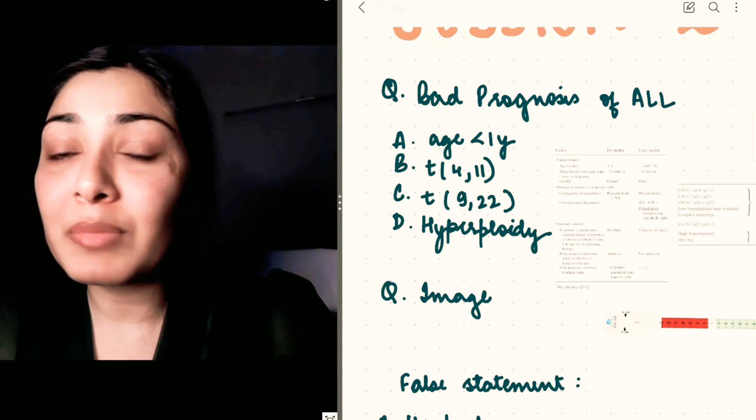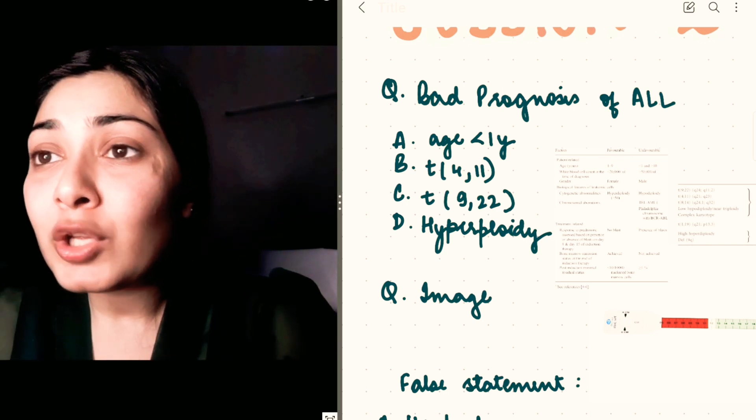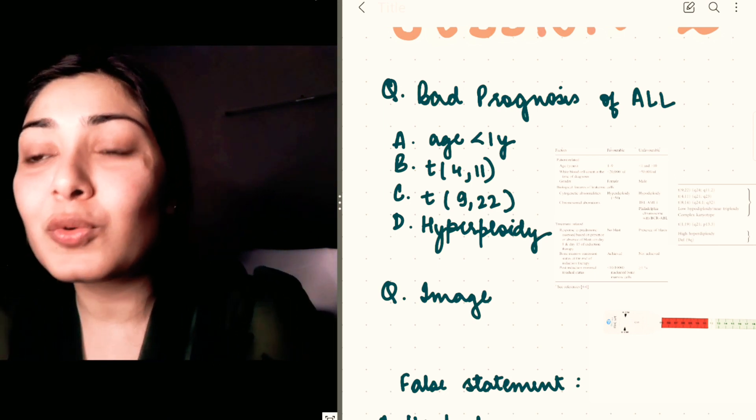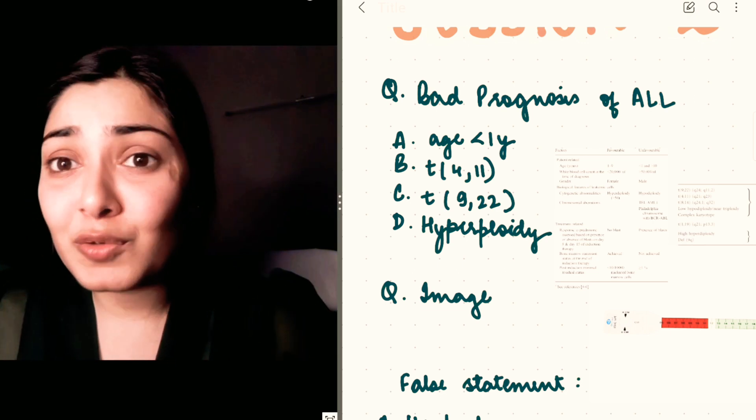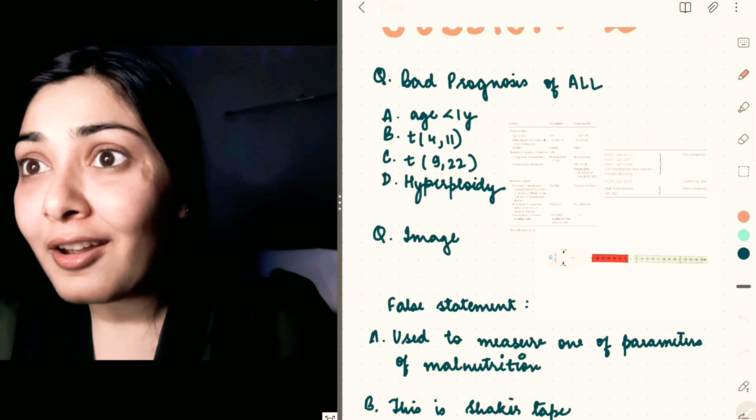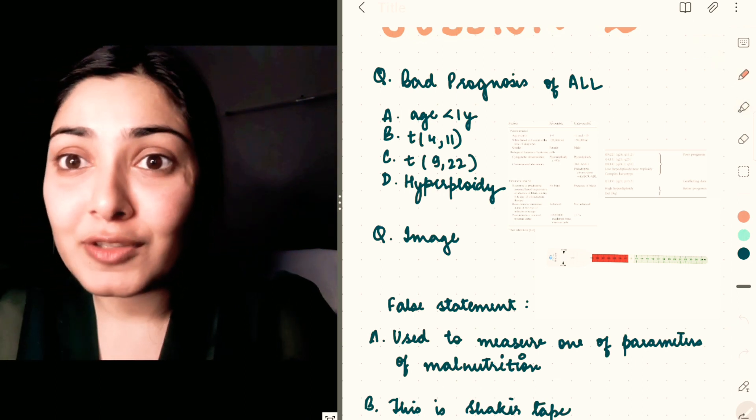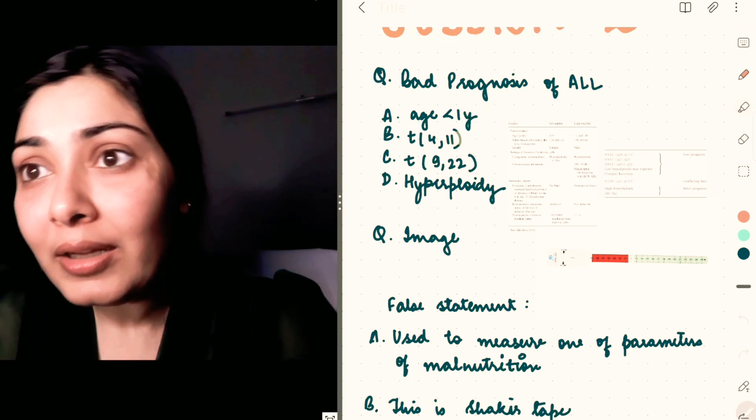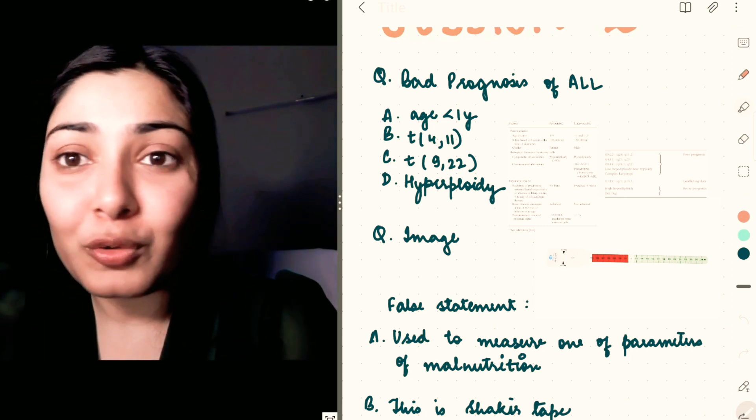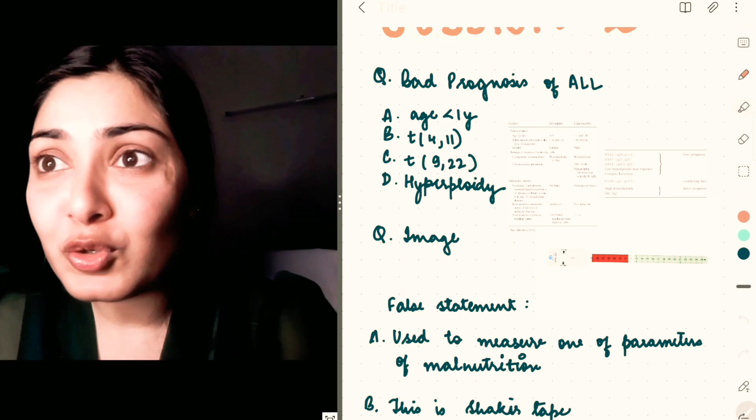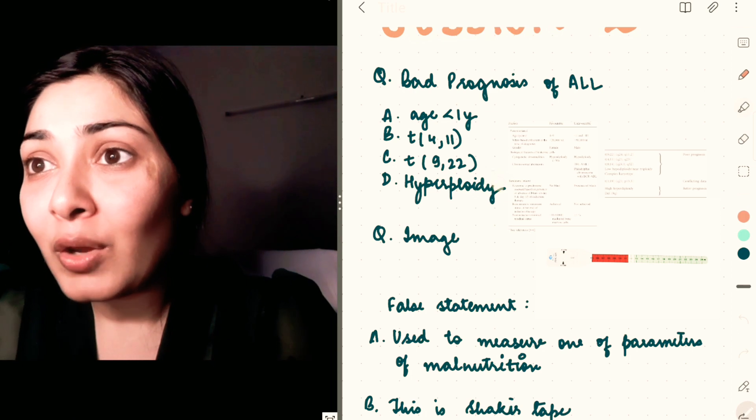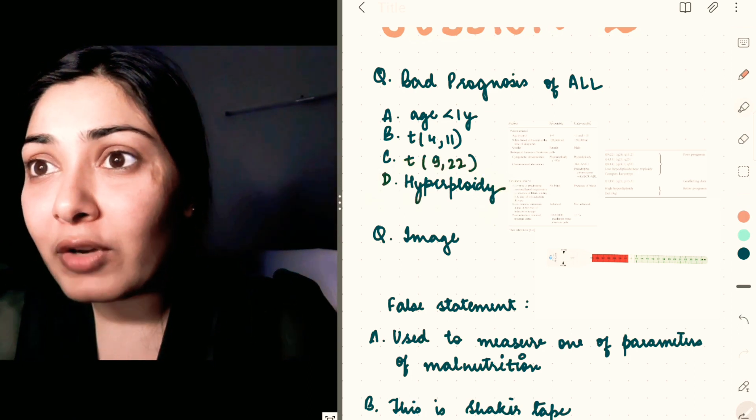The options were somewhat like: age less than one year, translocation 4;11, translocation 9;22, and hyperploidy. It's very easy to rule out in this case. Age less than one year and more than 10 years is a poor prognostic factor, so it's bad. Translocation—wherever you see this 11 chromosome, it's a very nasty chromosome, bad prognosis. Again, 9;22 Philadelphia chromosome is a bad prognostic factor, and hyperploidy is a favorable factor.